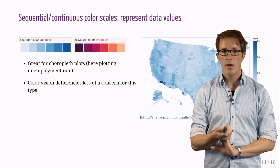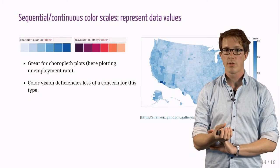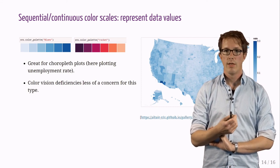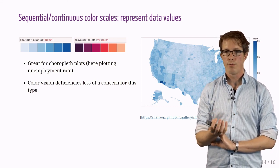Continuous color scales are great for choropleth plots, such as the one on the right hand side. CVD is less of a concern for this type of plots.